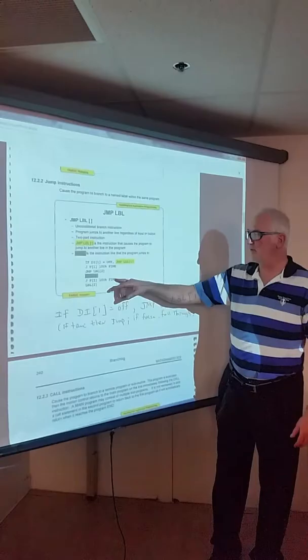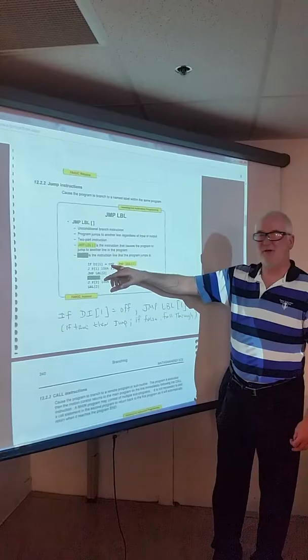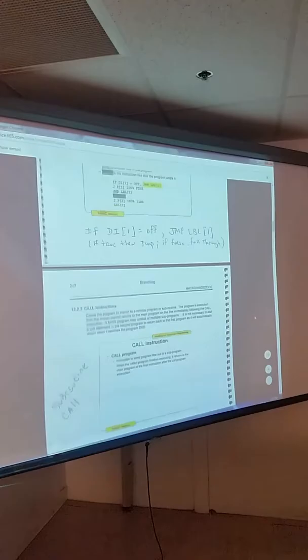Then it sees label one, big deal. It doesn't really do anything that it goes to this point. Otherwise, if it's off, if this if instruction is true, then it's going to jump down to here. So just a quick overview of that.